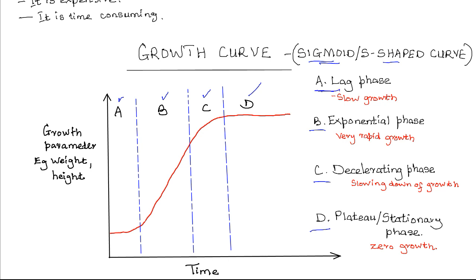The lag phase is characterized by slow growth. This is due to two main reasons: first, the number of cells dividing in the organism is still few; and second, the cells have not yet adjusted to the environmental factors. So the rate of mitotic cell division is low, leading to a slow rate of growth.